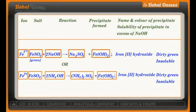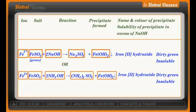Let us take one more example: ferrous sulfate FeSO₄ treated with excess NaOH. Initially you get sodium sulfate Na₂SO₄ along with Fe(OH)₂, that is ferrous hydroxide — a precipitate which is light green in color. This precipitate is indicated by a downward arrow and is insoluble in excess sodium hydroxide. The equation can be balanced by putting 2 in front of NaOH.